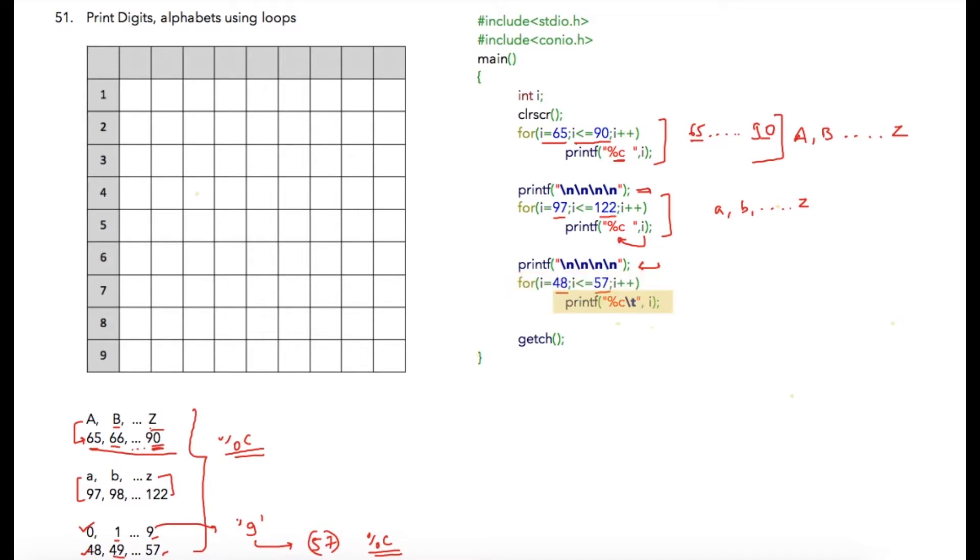So digit 0, 1, 2 and so on will be printed till 9. In the first printf statement you can add a comma over here so that you get output similar to this. Similarly in the second printf you can add another comma over here so you get output something like this. In case of third printf variable I have added slash t which will create tabs on the screen.